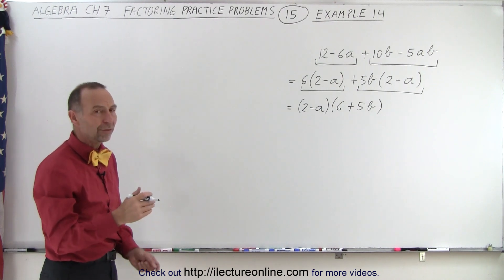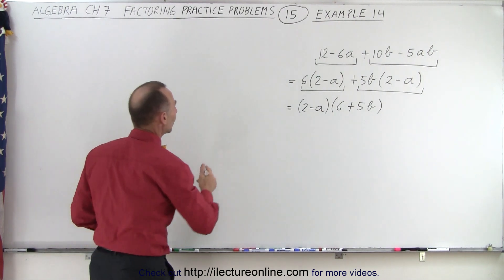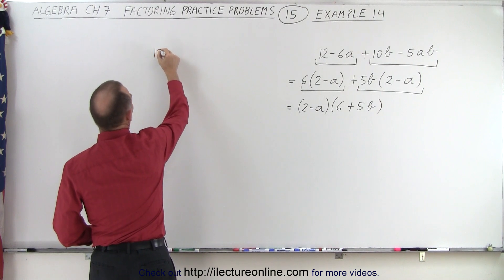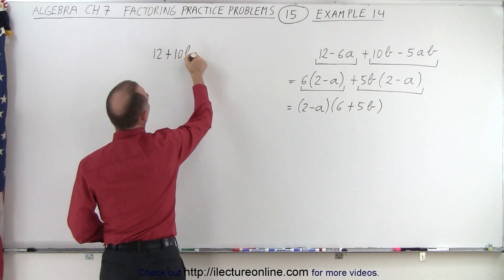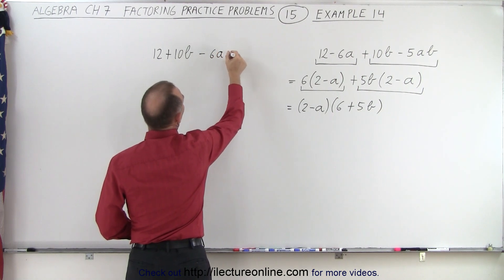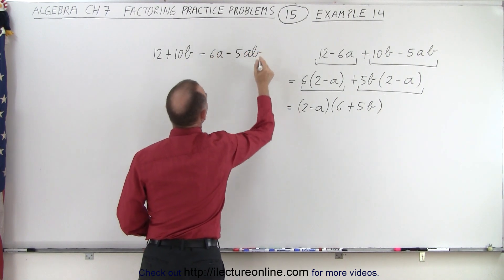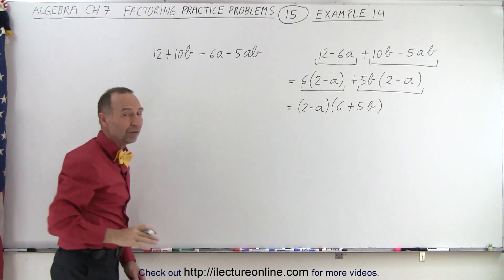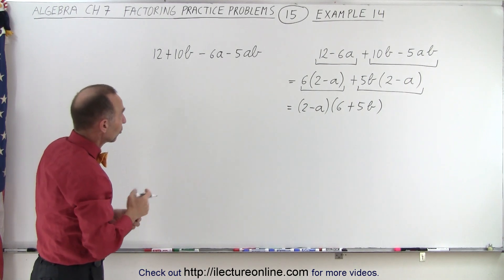It can be factored. Now, what if we had scrambled the terms? What if we had written 12 plus 10B, and then minus 6A and minus 5AB? Would we then be able to factor it if we had scrambled the terms? Well, let's see.